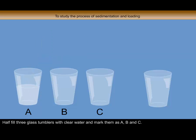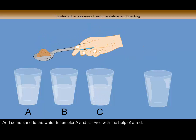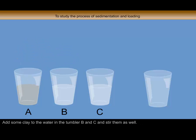Procedure: Half fill three glass tumblers with clear water and mark them as A, B, and C. Add some sand to the water in tumbler A and stir well with the help of a rod. Add some clay to the water in tumblers B and C and stir them as well.